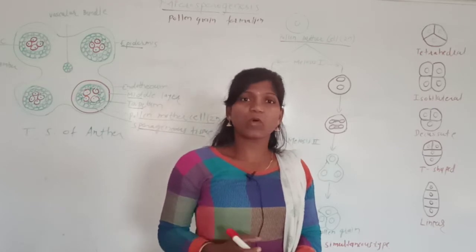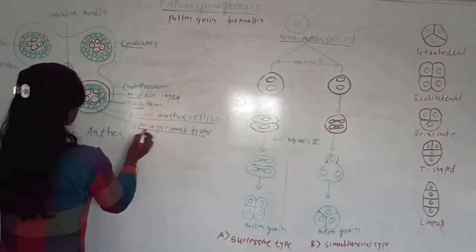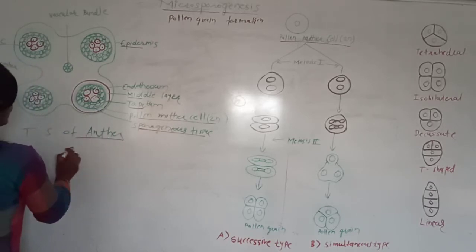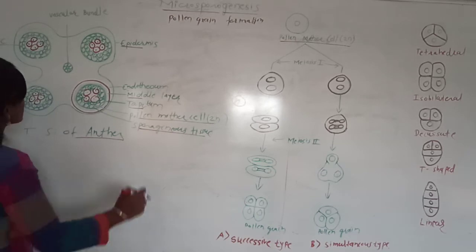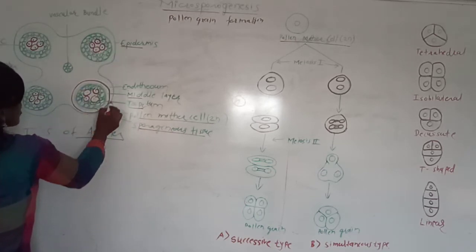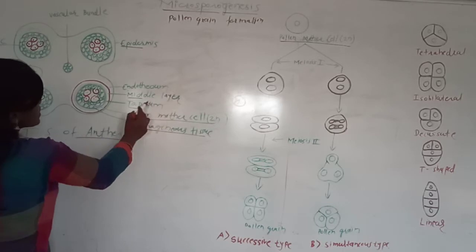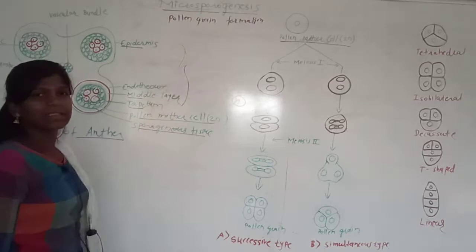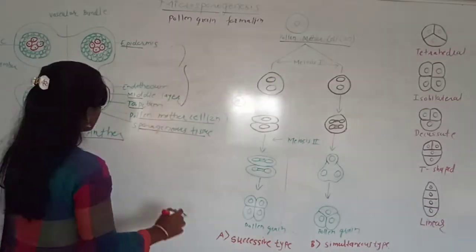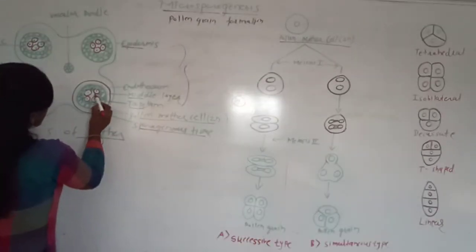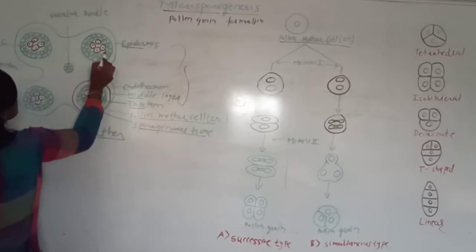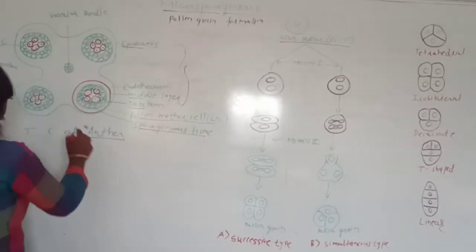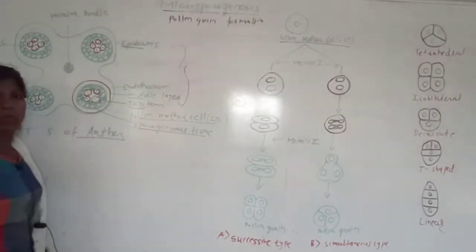What is sporogenous tissue? Sporogenous tissue is present in the anther. Look at here — this is the structure of a transverse section (TS) of the anther. It is made up of the anther wall, which consists of epidermis, endothelium, middle layer, and tapetum. These are the components of the anther wall. In the inner side, a pollen chamber is present. There are four pollen chambers, also called pollen sacs.